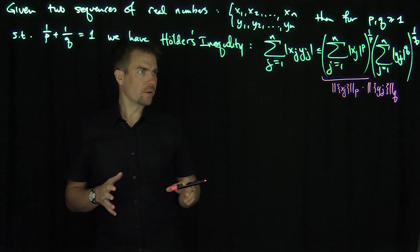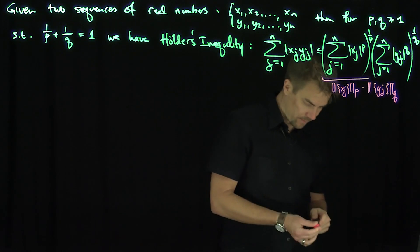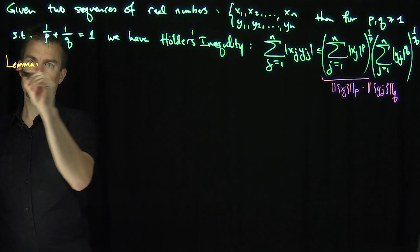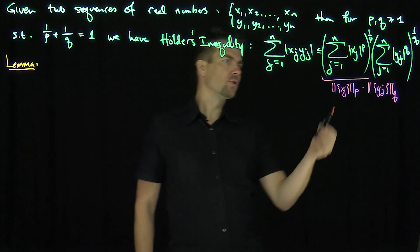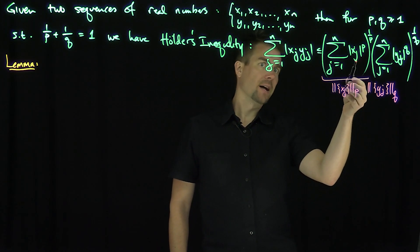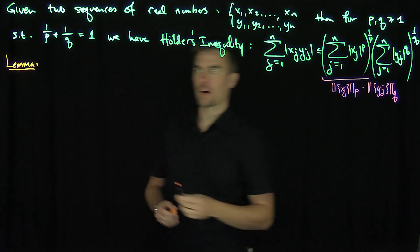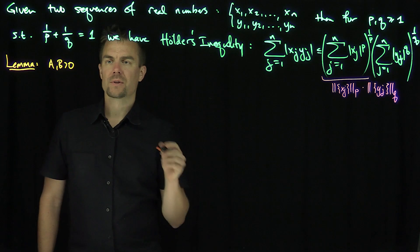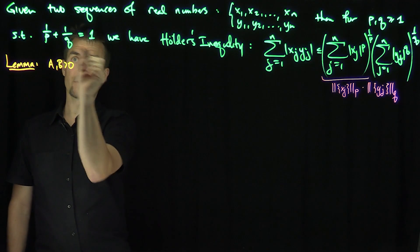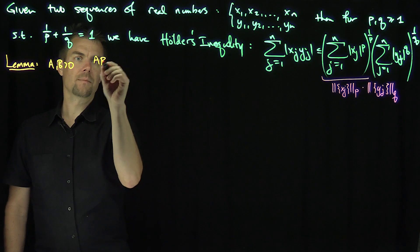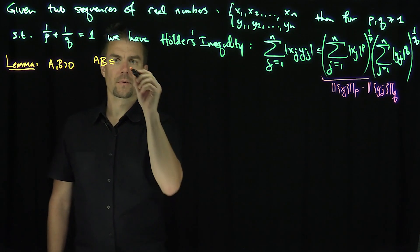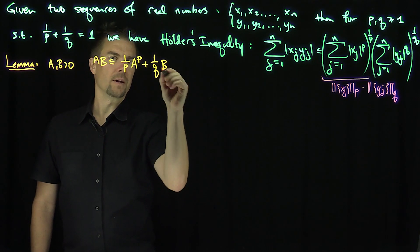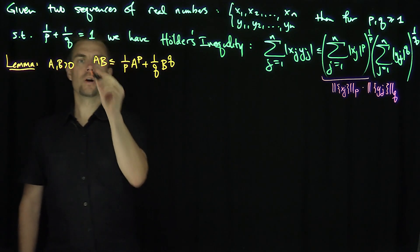In order to prove this inequality, we're going to make a couple of reductions. First we'll prove a lemma — Young's lemma. It suffices to assume these sequences are strictly nonzero, since zeros don't affect anything. The lemma states: if a and b are greater than zero, then a times b is less than or equal to (1/p)a^p plus (1/q)b^q, for the same values of p and q. That's Young's inequality.